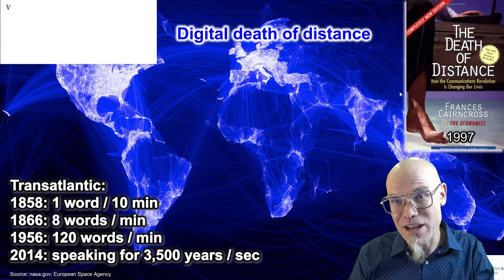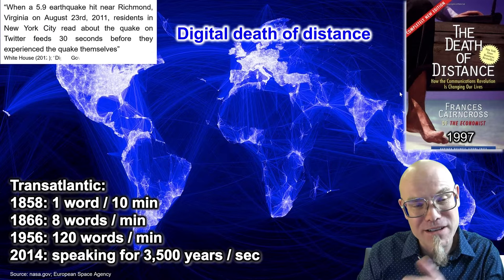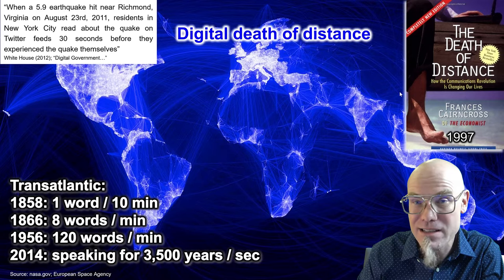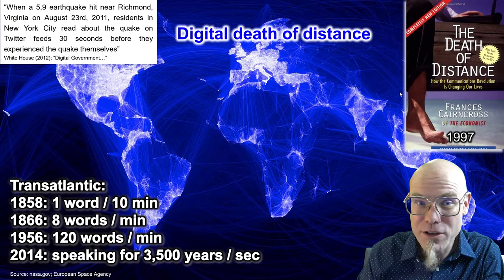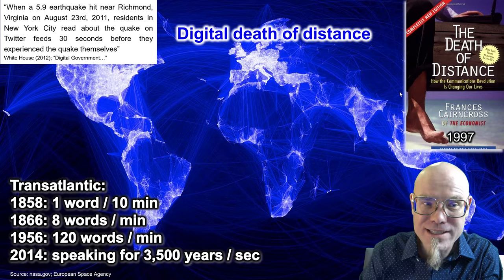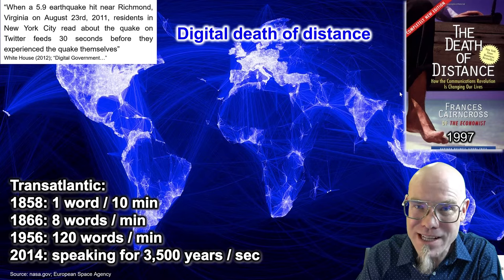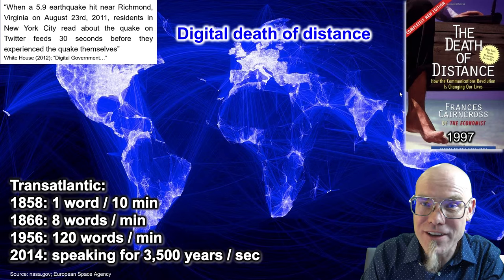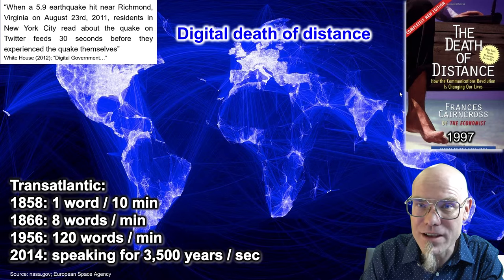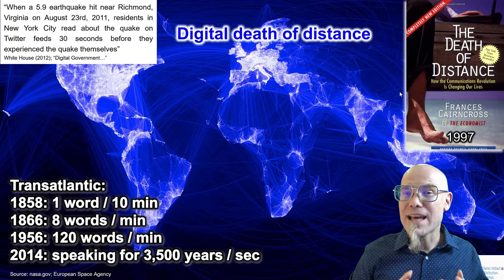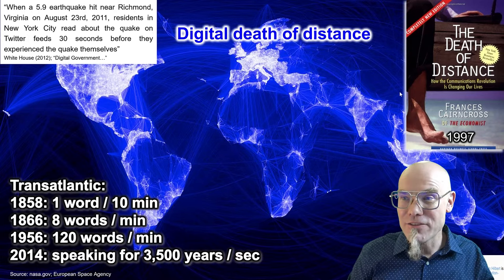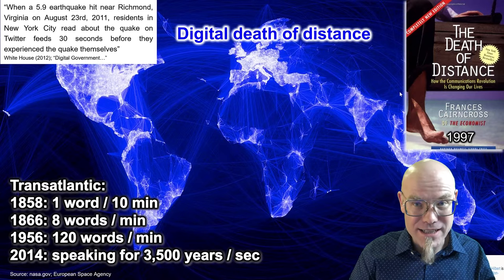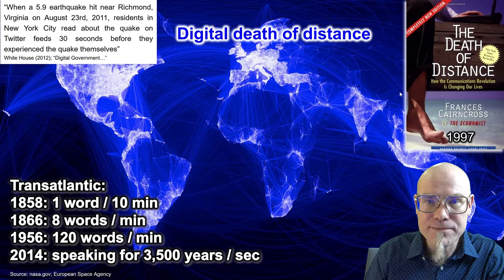For example, when an earthquake happened in Richmond, Virginia, residents in New York could read about it on Twitter 30 seconds before they experienced the quake themselves, because the information on Twitter actually traveled faster than the seismic wave was traveling through the earth. So the idea that information travels at the speed of light still affects our understanding of reality.